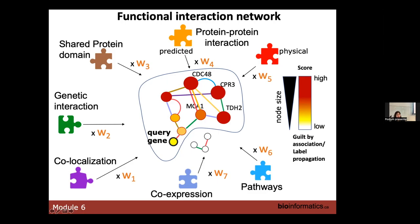Each line is a connection from the network, and each different color comes from a different network. Some tools gather all the networks and just put one line that is the sum of all the different networks. But in GeneMania, you keep the information about the source of the network — that's why you have the different colored lines.